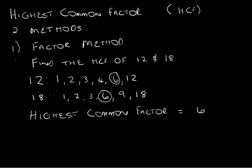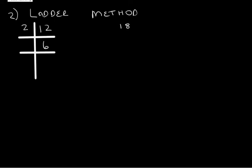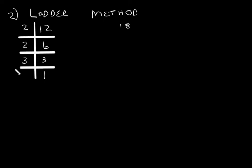Now let's look at the second method, called the ladder method. This involves us writing 12 and 18 as a product of its prime factors. We need to divide 12 by a prime number. Let's start with the smallest prime number, which is 2. 12 divided by 2 is 6. We can divide by 2 again. 6 divided by 2 is 3. We divide by 3, and 3 divided by 3 is 1. That's how we know we are done. So 12 is the same thing as 2 times 2 times 3. Remember that on this side we can only divide by prime numbers.